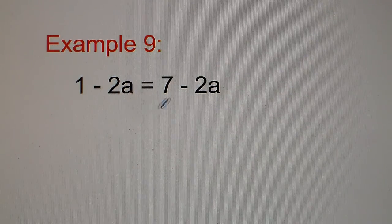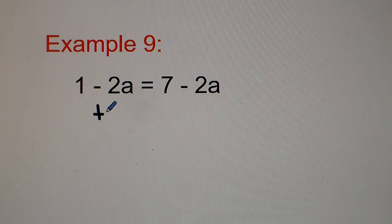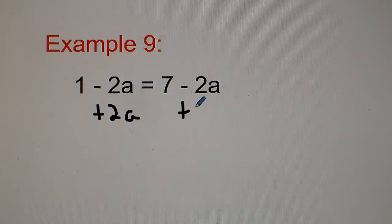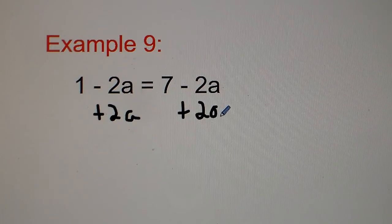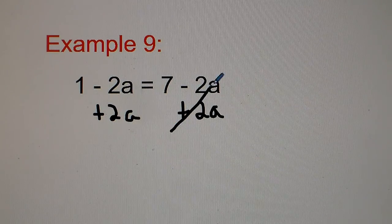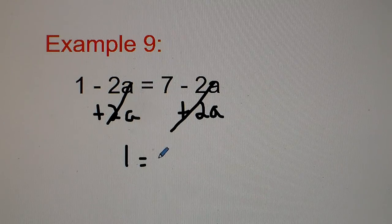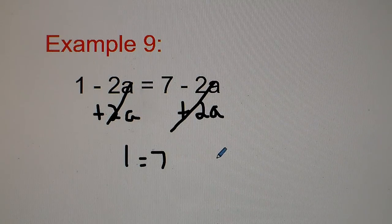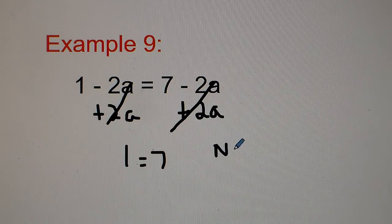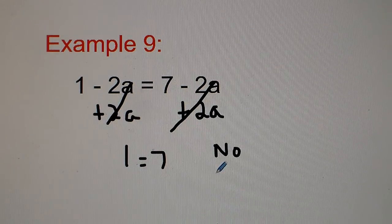Let's try number 9. We add 2a to both sides — those cancel out — and we get 1 equals 7. We know 1 equals 7 is not possible, so we write no solution.